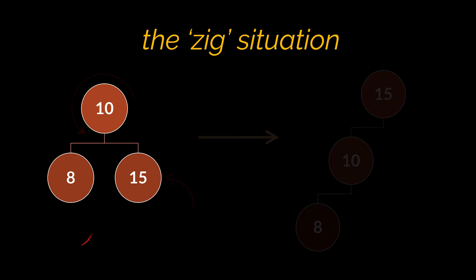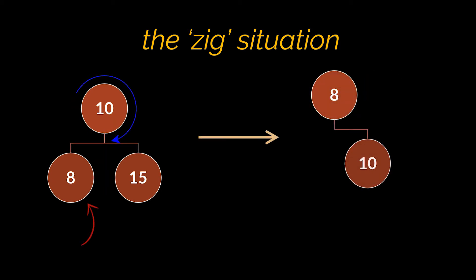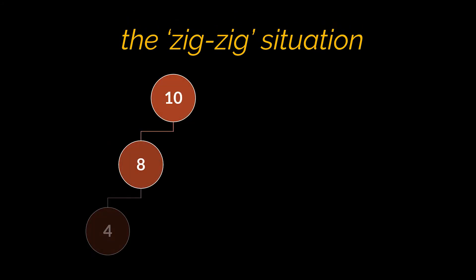Similarly and symmetrically, if the splaying was to be done for node 8, then a right rotation would be required on node 10. The second situation we are going to cover also has two sub-cases symmetrical to the tree. This situation is known as the zig-zig situation, and you may recall its cases from previous videos as the right-heavy and left-heavy situations.